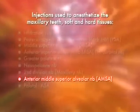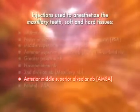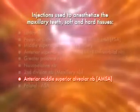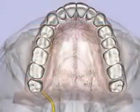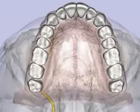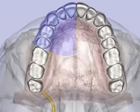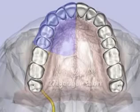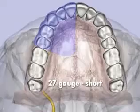The anterior middle superior alveolar nerve block provides pulpal anesthesia to the five maxillary anterior teeth — incisors, canine, and premolars — as well as the buccal soft tissue and bone and the palatal soft tissue and bone overlying these same teeth. A 27 gauge short needle is recommended.